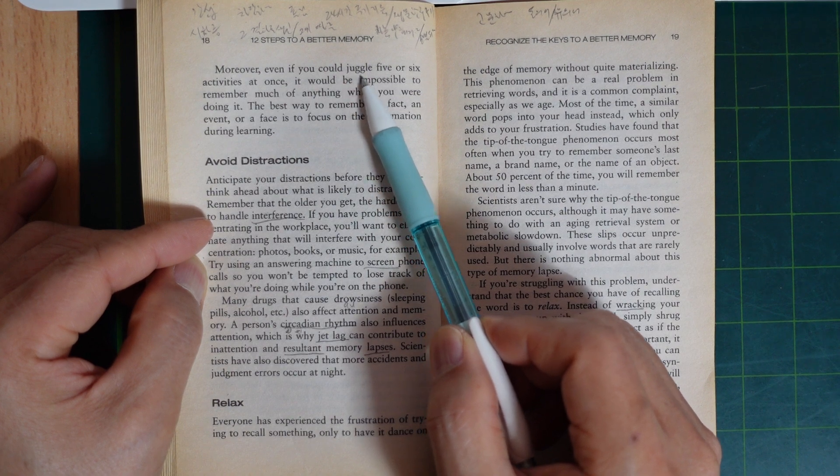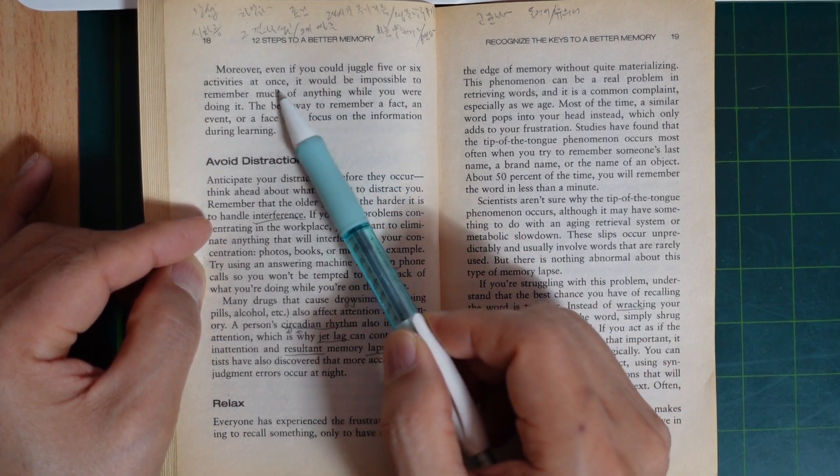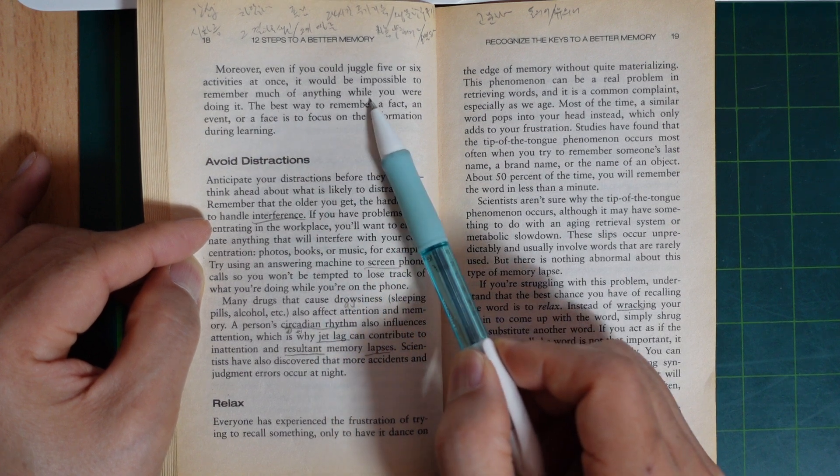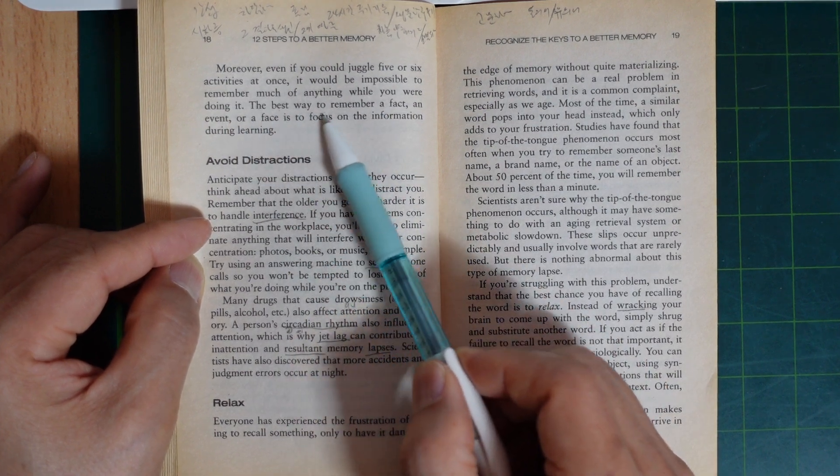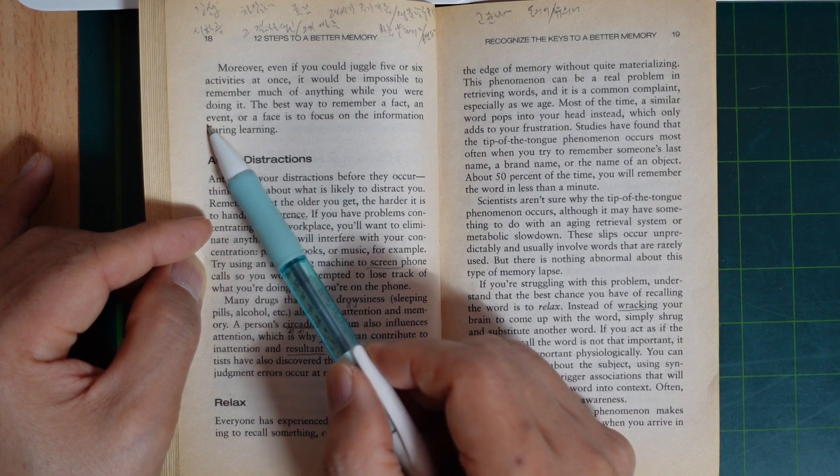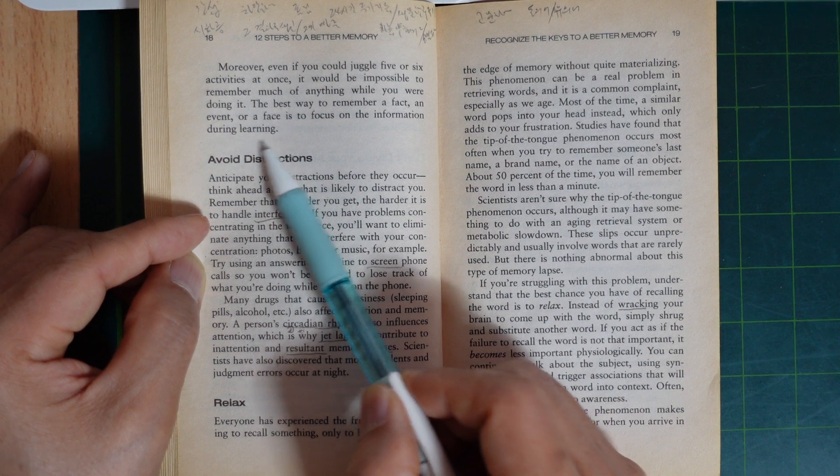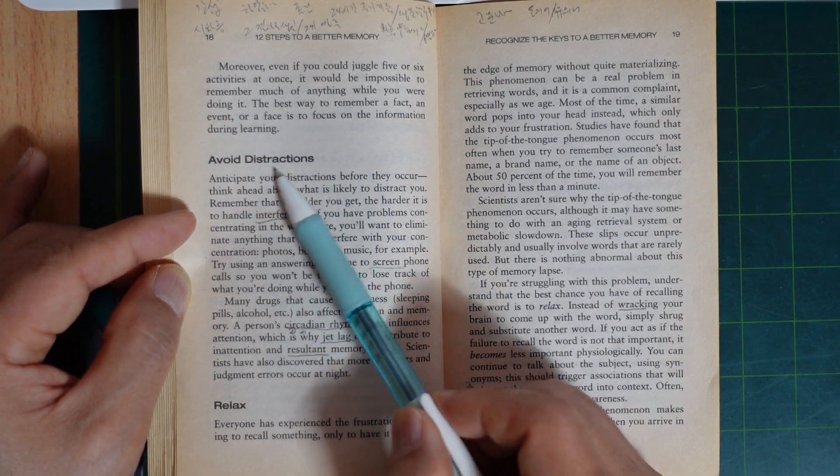Moreover, even if you could juggle five or six activities at once, it would be impossible to remember much of anything while you are doing it. The best way to remember a fact, an event, or a phrase is to focus on the information during learning.